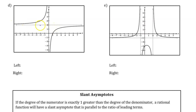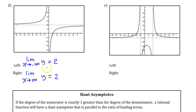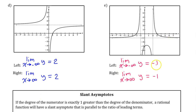For part d, we are given a graph, so it's easy to see that y is approaching 2 on the left and 2 on the right — those are your left and right end behaviors. For part e, we are also given a graph; there is a horizontal asymptote at negative 1, so the function approaches negative 1 on the left and negative 1 on the right.